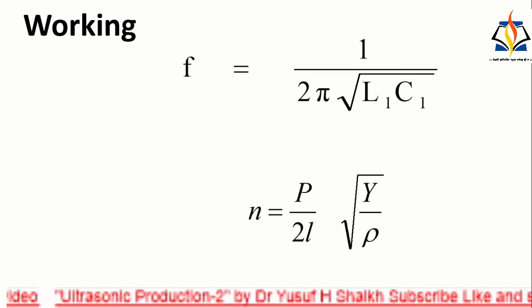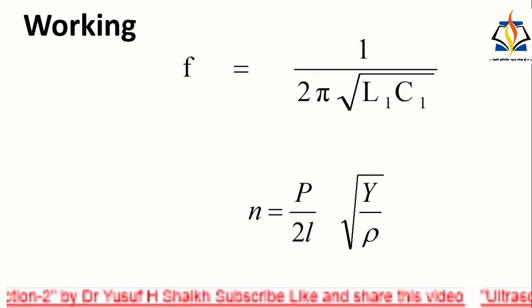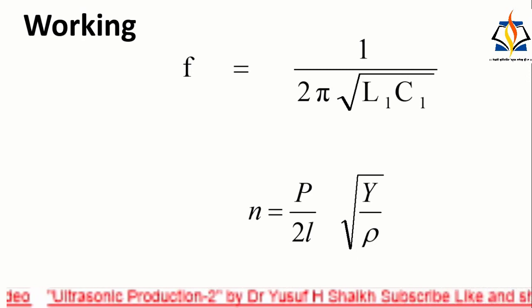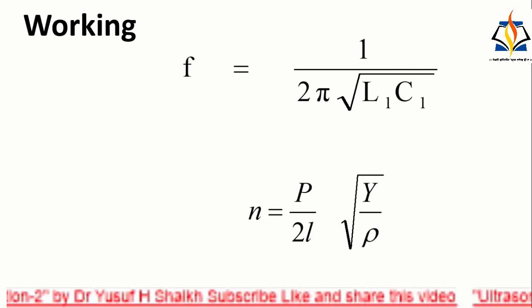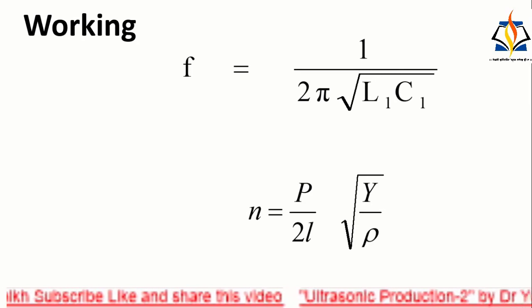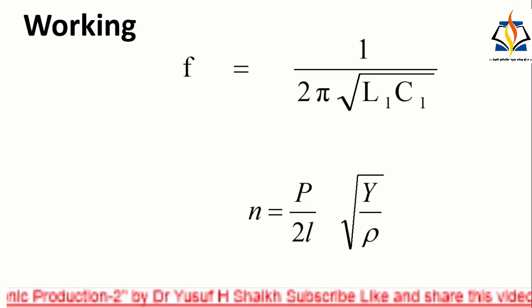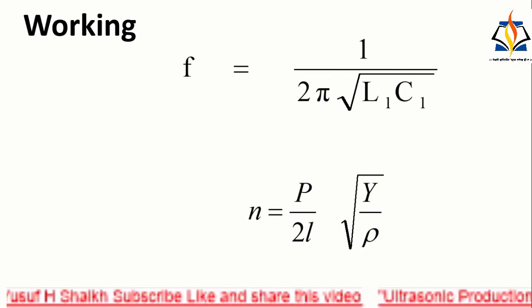The variable condenser C is adjusted such that the frequency of applied AC voltage is equal to the natural frequency of the quartz crystal and thus resonance takes place. The vibrating crystal produces longitudinal ultrasonic waves of large amplitude.